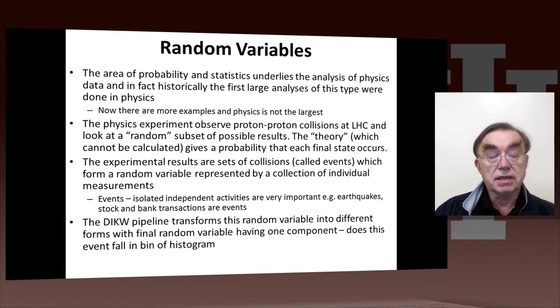It's something that does things randomly, and a random variable is either a single number, or in the case of the physics experiment, huge collections of numbers, because the results of any one event are very big and lots and lots of numbers.